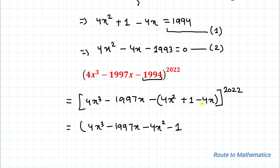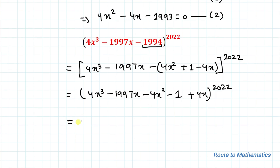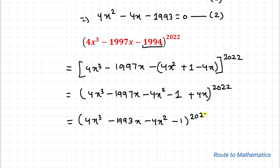Opening the bracket: 4x³ minus 1997x minus 4x² minus 1 plus 4x, whole to the power 2022. Combining the x terms: minus 1997x plus 4x gives minus 1993x. So we have 4x³ minus 1993x minus 4x² minus 1, whole to the power 2022. Taking x common from the first and third terms: x(4x² minus 1993 minus 4x) minus 1, whole to the power 2022.